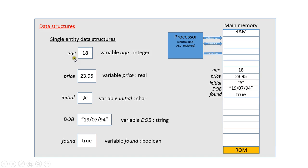So each of these data structures have their own name and then the value that's inside the data structure, and associated with that is a data type. This one, the name is price and its type is real, or in some languages that's called a float or a single, and it means a value that has a fractional part, i.e. numbers after the decimal point.